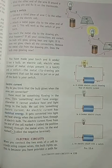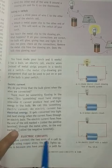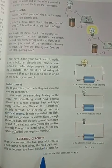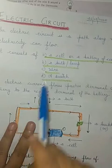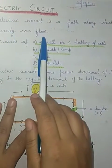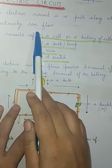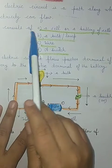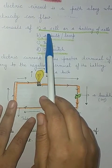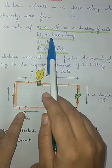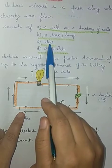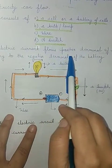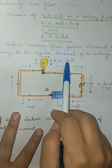The next main topic we will discuss is the electric circuit. An electric circuit is a path along which electricity can flow. An electric circuit consists of a cell or a battery of cells, a bulb or lamp, wires, and a switch. An electric current flows from the positive terminal of the battery to the negative terminal.